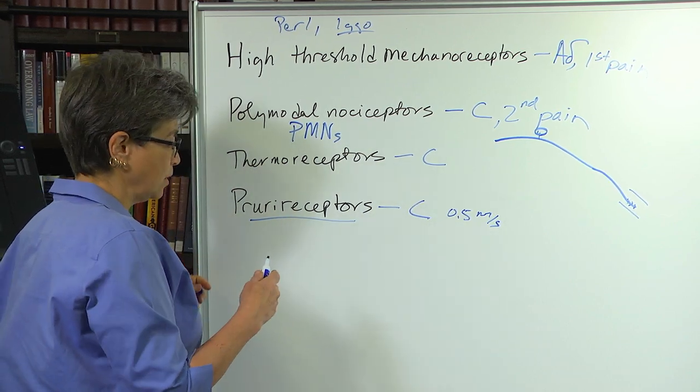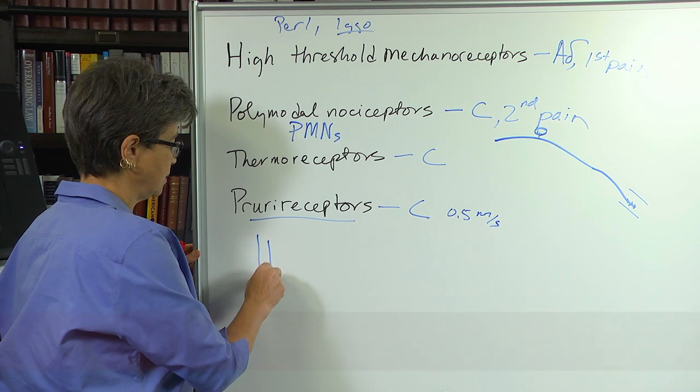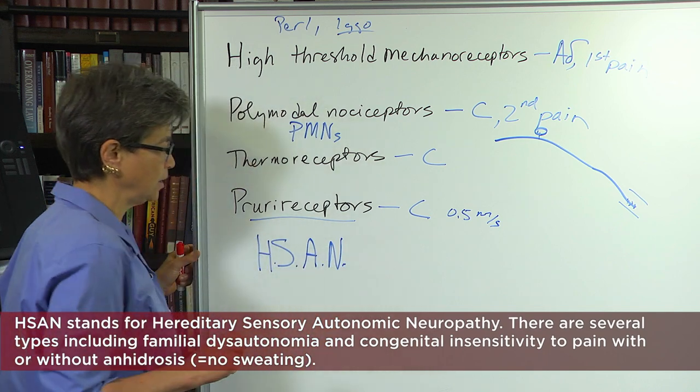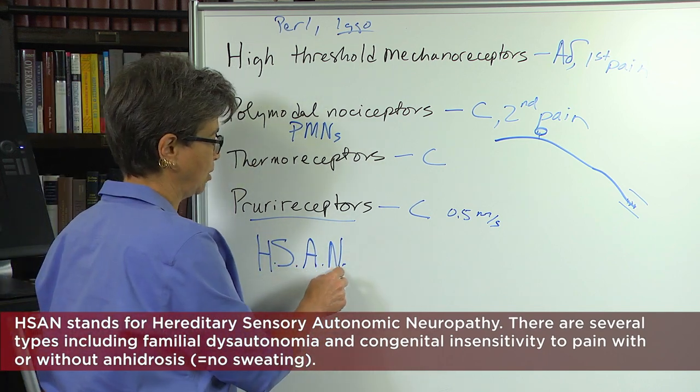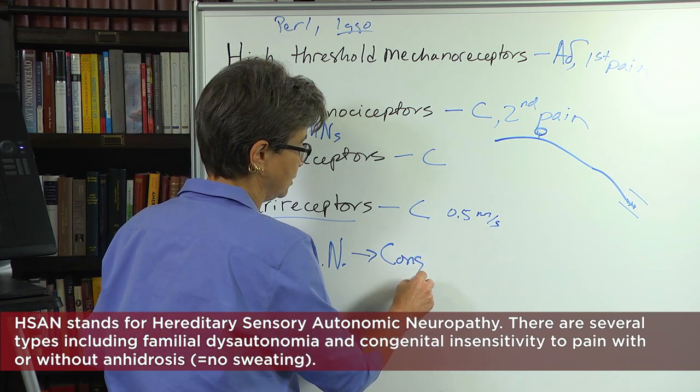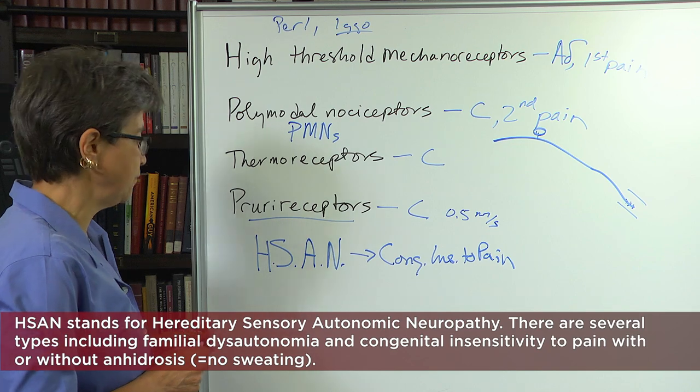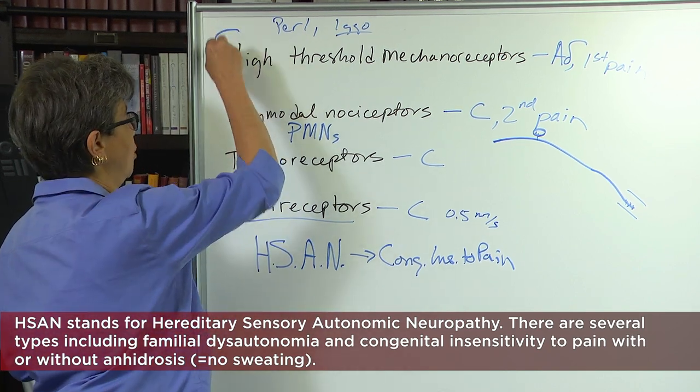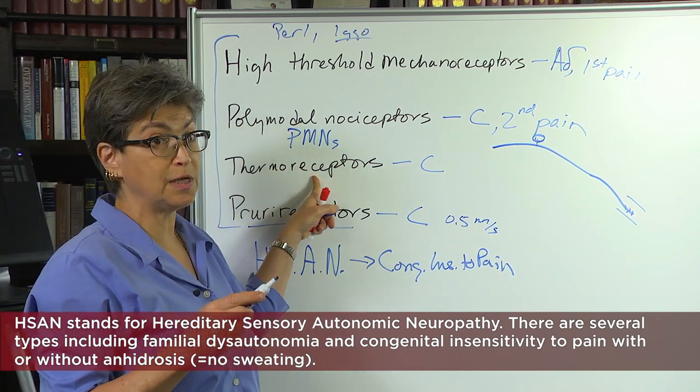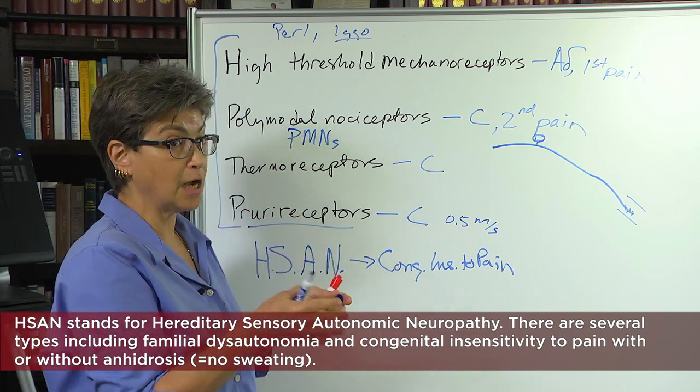And one common way for this - well, it's not a common condition, but it is the way that you get these affected preferentially - are through the hereditary sensory autonomic neuropathies. And this is a group that includes the congenital insensitivity to pain. And congenital insensitivity to pain is a deficit in all of these. And I put up the thermoreceptors, even though these are not nociceptors, these are thermoreceptors responsive to innocuous changes in temperature.